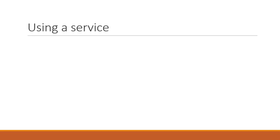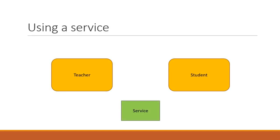Let's first understand what we want to achieve, what is a Subject, and how we can use a Subject for component interaction. Let's say we have two components: teacher and student. They may or may not be related — they could be parent-child, siblings, or not at all related. But they share the same instance of a service.